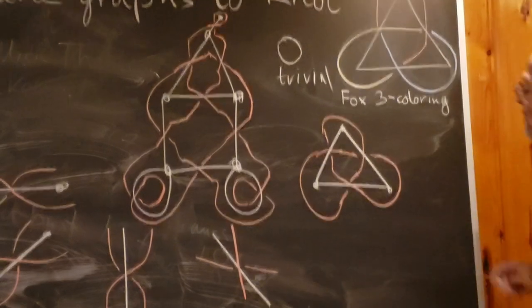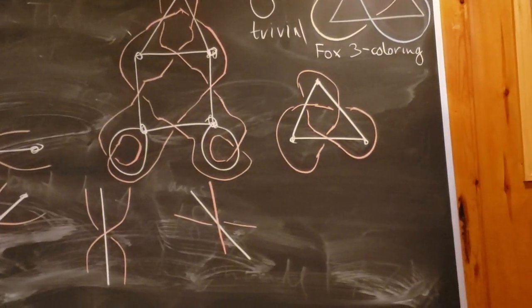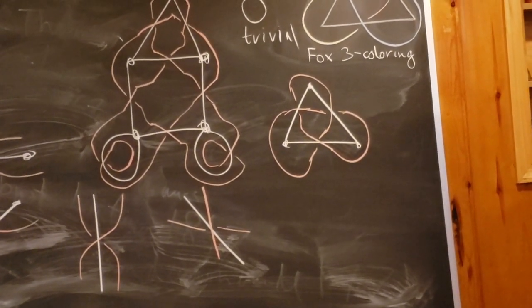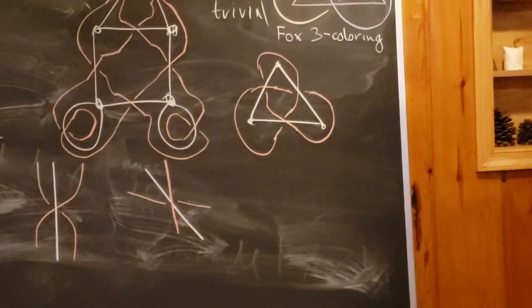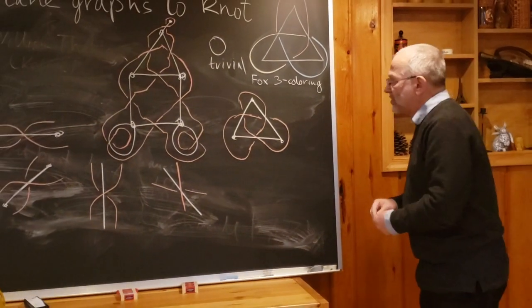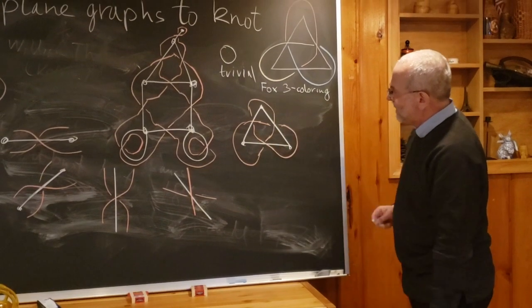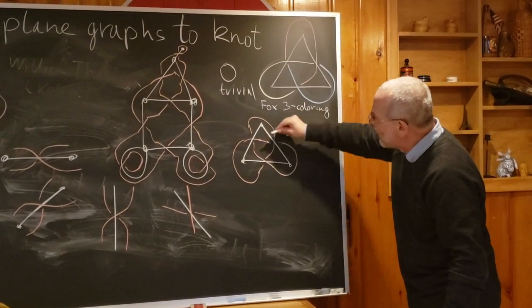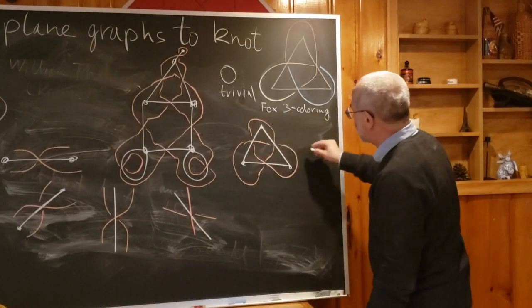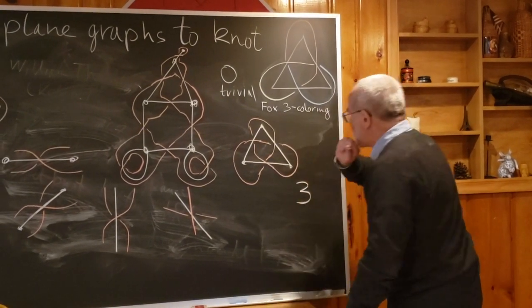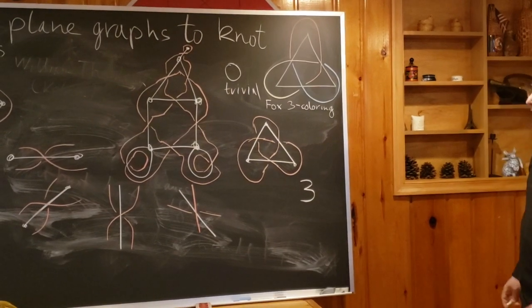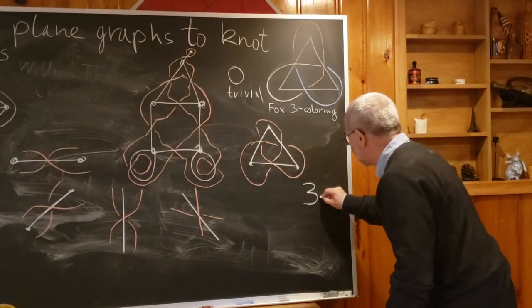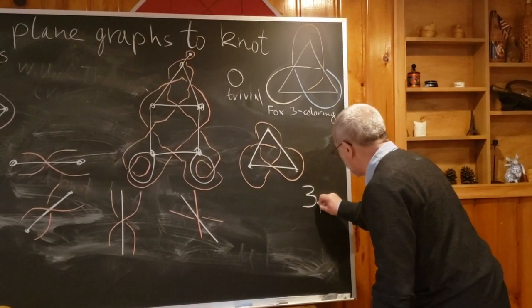This is the knot—the trivial knot. When Tait was making tables, he had some notation for knots, and there was a rather simple notation. What will be the name of this? The first name is related to the number of edges in the graph, meaning number of crossings in the diagram. So the name of this will be 3. In fact, Tait noticed there is only one knot with three crossings, so it will be named 3_1.